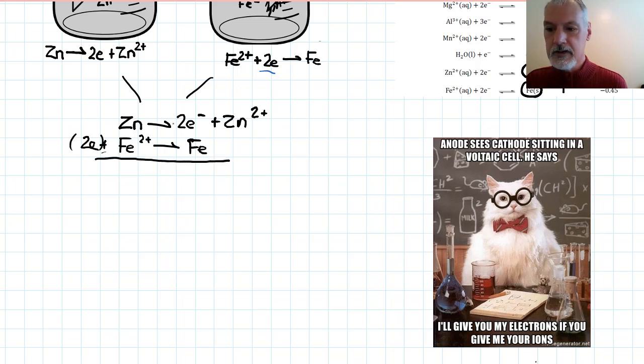If I add this together, I'll get my overall equation. Now, I do notice here that these both are two electrons each, so they'll cancel. Otherwise, I'd have to multiply to get a common factor. But those will cancel, giving me my overall cell reaction as zinc and Fe2+ turning into Fe iron and zinc ions. So that represents my overall reaction.